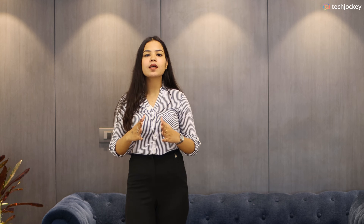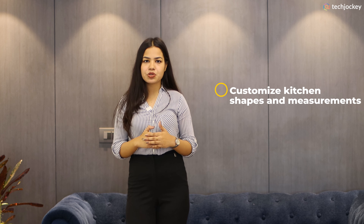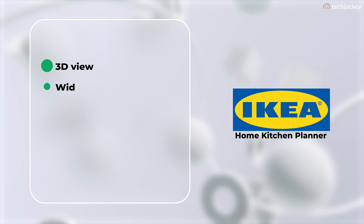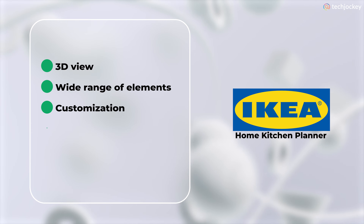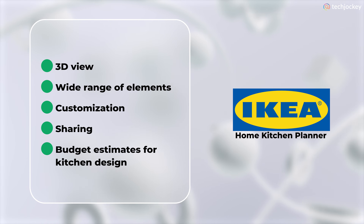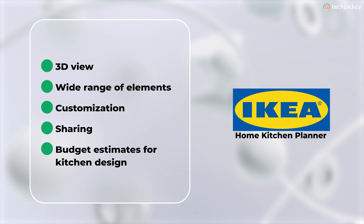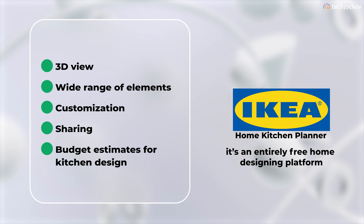Number 3 is IKEA Home Kitchen Planner. It allows users to customize kitchen shapes and measurements, add items, and view ready-made kitchens. Its features include 3D view, a wide range of elements, customization, sharing, and budget estimates for kitchen design, allowing users to select and test elements. And what's the best? It is an entirely free home design platform.